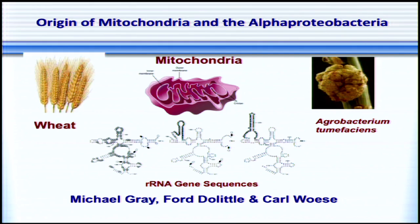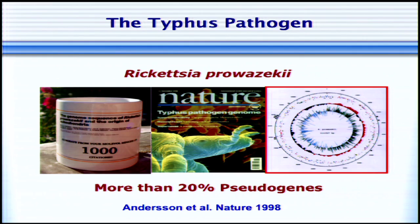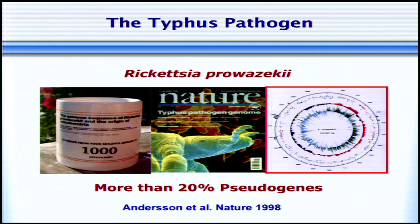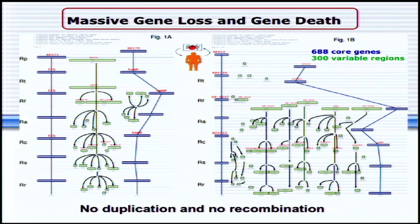So we did just that, and we started to sequence the first alpha proteobacterial genome, which was the typhus pathogen, an obligate intracellular parasite. Here you can see a really nice cup that my team made when this paper, published in Nature in 1998, reached 1,000 citations. In this paper, we showed that the typhus pathogen has more than 20% pseudogenes, which was really controversial at the time. By now, of course, it's well established, and we have done lots of work to look at this process of gene loss and gene death.